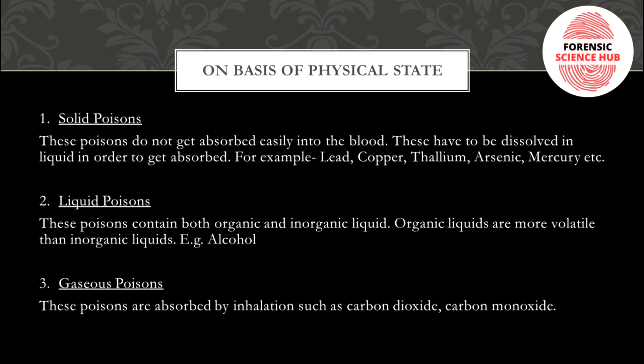On the basis of physical state, there are solid, liquid, and gas. Solid poisons are not absorbed readily — they first have to be dissolved in liquid. If someone gives someone a solid poison, it has to be mixed into some liquid first, or if taken directly, it dissolves in the blood before causing action. Examples of solid poisons include lead, copper, thallium, arsenic, and mercury.